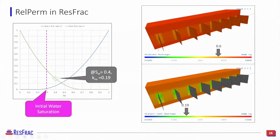If I then start producing and my oil saturation starts dropping — going from red to orange — I'm now at 60% oil saturation or 40% water saturation. I have a commensurate change in rel perm around the fractures where I've seen depletion, going from 0.34 to 0.19, as would also be reflected in the curve.